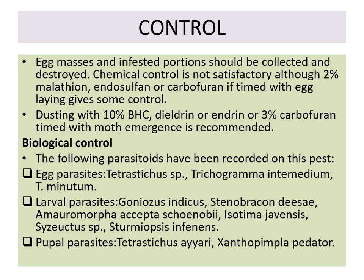For biological control, the following parasitoids have been recorded on this pest. Egg parasitoids include Tetrastichus species and Trichogramma species. Larval parasitoids include Goniozus indicus and Stenobracon species. Pupal parasitoids include Tetrastichus and Xanthopimpla. These are some examples of biological control for the sugarcane top borer.